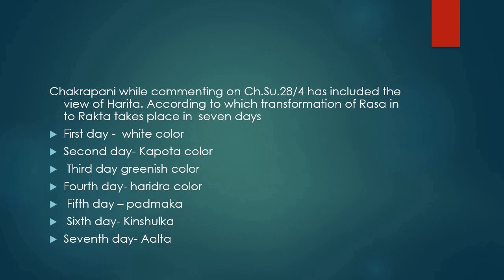Chakrapani, while commenting on Charaka Sutra 28 verse 4, has included the view of Harid, according to which transformation of Rasa into Rakta takes place in 7 days. On the 1st day the colour remains white; 2nd day Kapodh colour, i.e. greyish blue; 3rd day greenish colour; 4th day Haridr colour, i.e. dark yellow; 5th day light Padmak, i.e. pinkish; 6th day Kinshuk, i.e. bright red colour; 7th day it becomes the colour of light Alta, i.e. dark red colour.